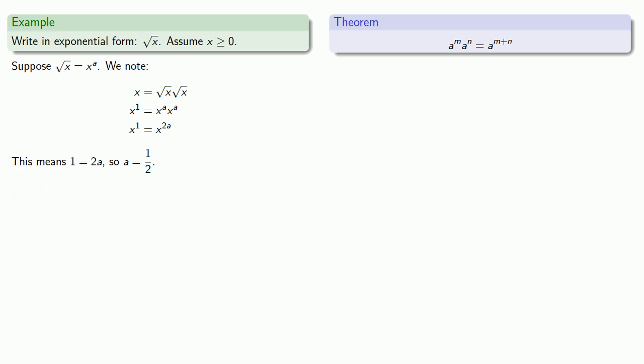And this generalizes. Again, for reasons that will become apparent a little bit later on, we do have to assume that x is greater than or equal to zero, but in general, x to power one over n can be defined to be the nth root of x.